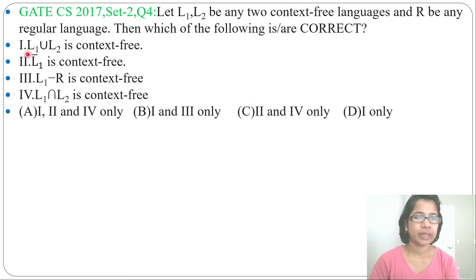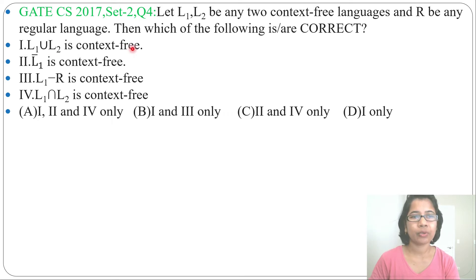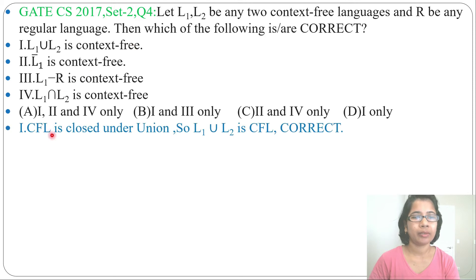First, L1 union L2 is context-free. Context-free language is closed under union. That's why L1 union L2 is context-free — this is correct.